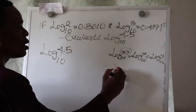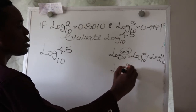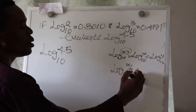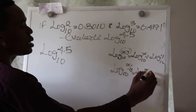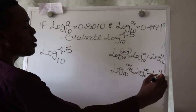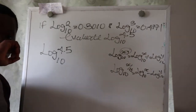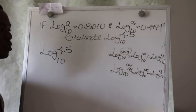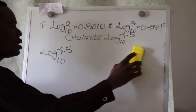If you have log of x over y base 10, that is going to give you log x base 10 minus log y base 10. So these are the rules of logarithm you need to bear in mind as you solve this question.